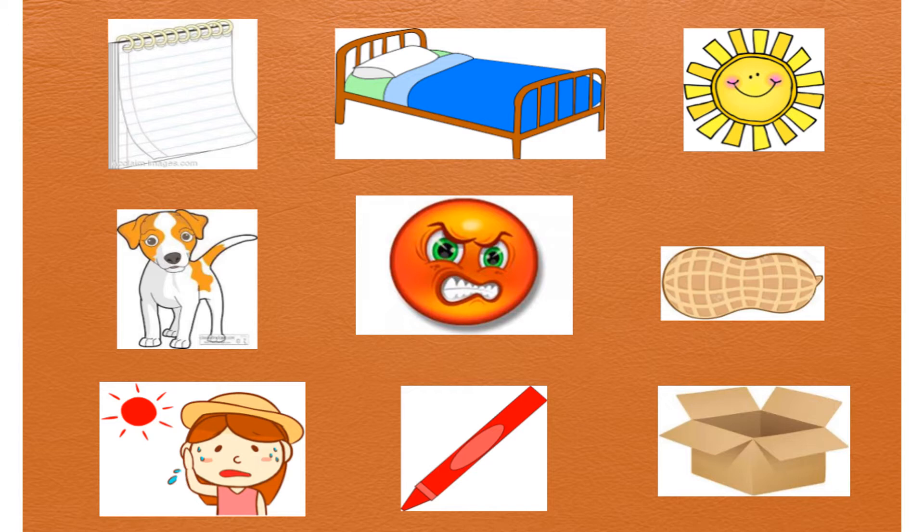So we're gonna look at the top row first. We have right here, that's a pad, you know, pad of paper, and a bed, and the sun. So those are the three: pad, bed, sun. Listen to my sounds and see if you can figure out what object I am saying.